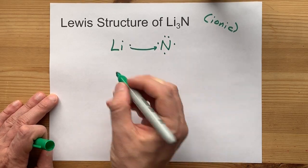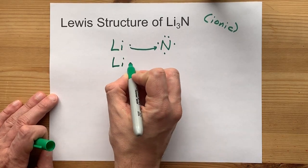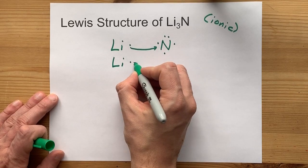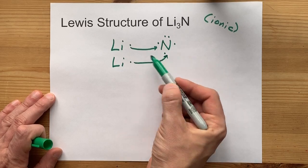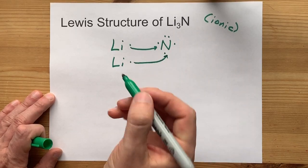Where is it going to get the other ones? Well, we could add a second lithium in there. We could say it donates its electron as well. Now, nitrogen has seven. We still need one more.